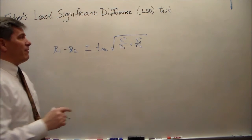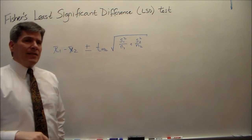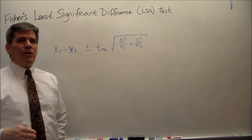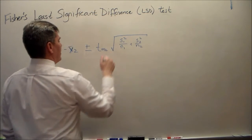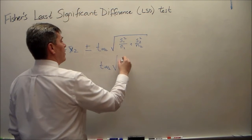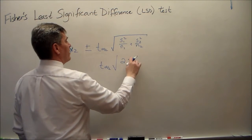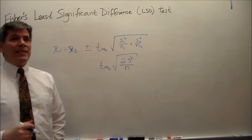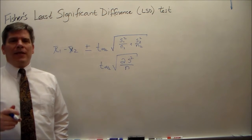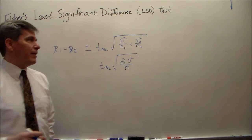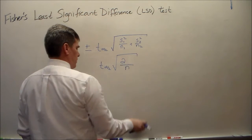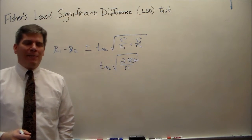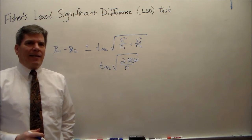What Fisher realized is that if the design is balanced and we're doing ANOVA — which requires testing homoscedasticity — then the two sample variances are going to be equal. So that part simplifies to t of alpha over 2 times the square root of 2 times MSE, where MSE — also called MSW or mean squared within — is the mean squared error from the ANOVA.